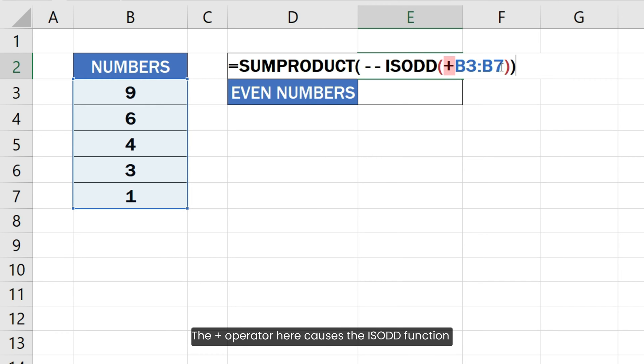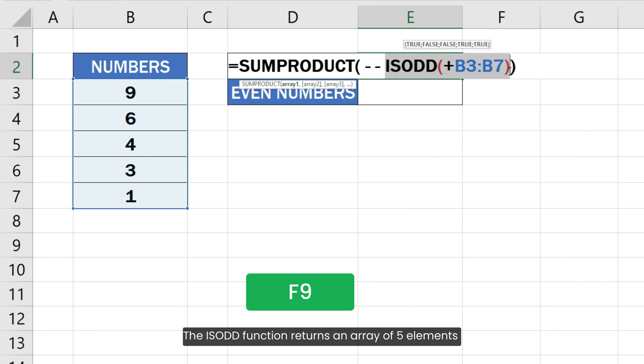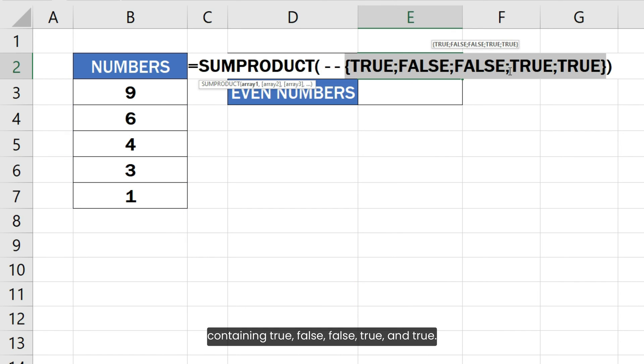The plus operator here causes the ISODD function to return the results for all the cells in the given range. The ISODD function returns an array of 5 elements containing true, false, false, true and true. The array has one element for each cell in the given range.